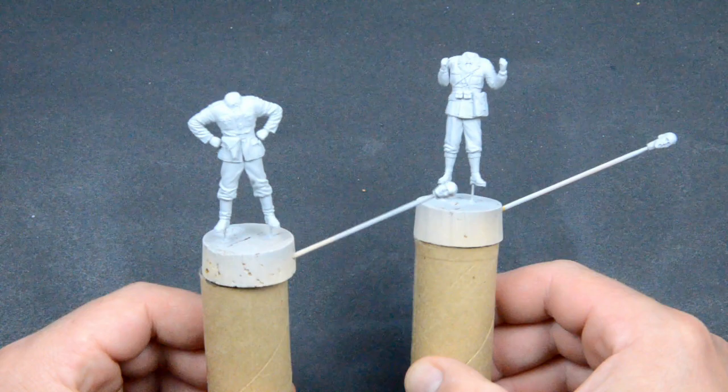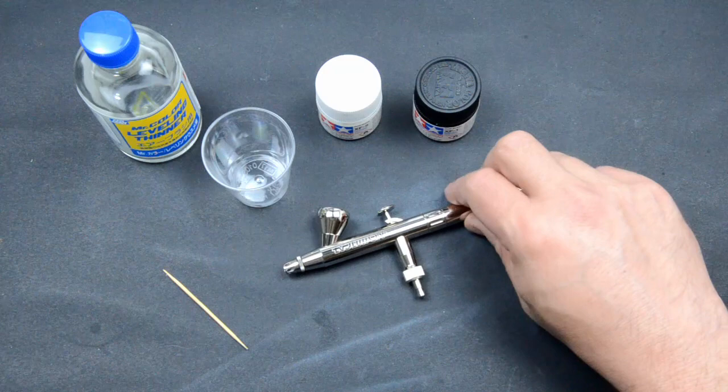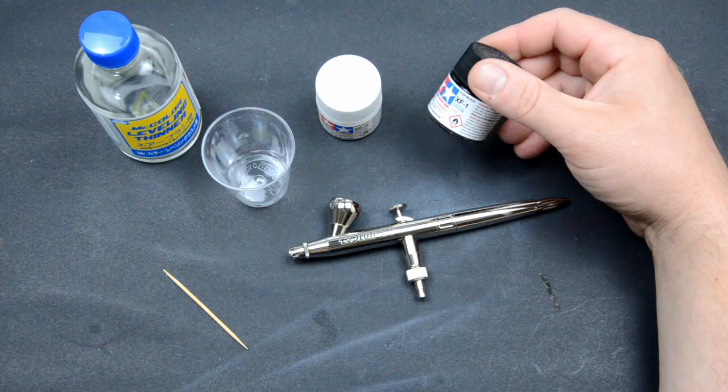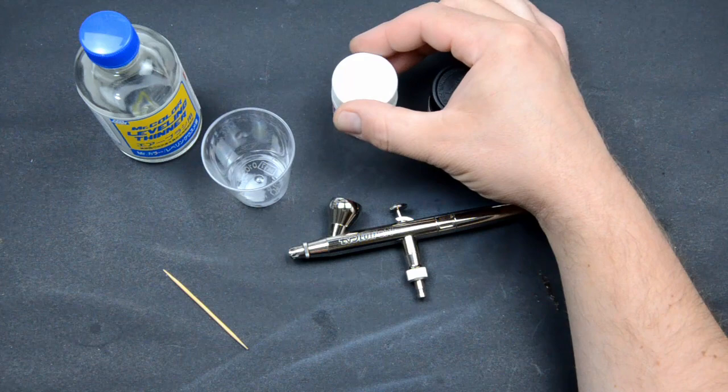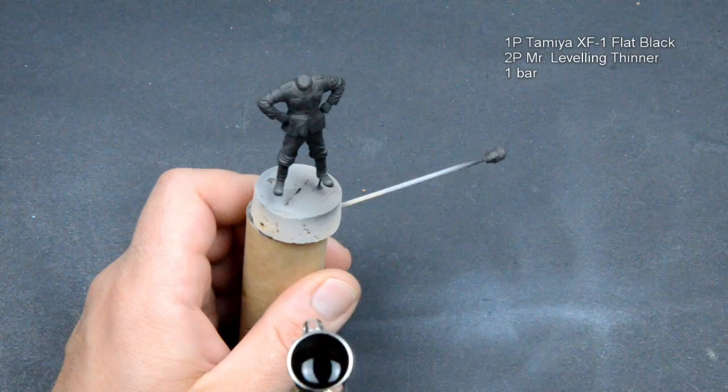So our figures have been primed with Tamiya surface primer. And now is the time to use the airbrush for pre-shading or pre-lighting. Basically we covered the entire surface with black paint and then sprayed the white color from above or in the direction from where the light is coming. The black cover will provide shadows.